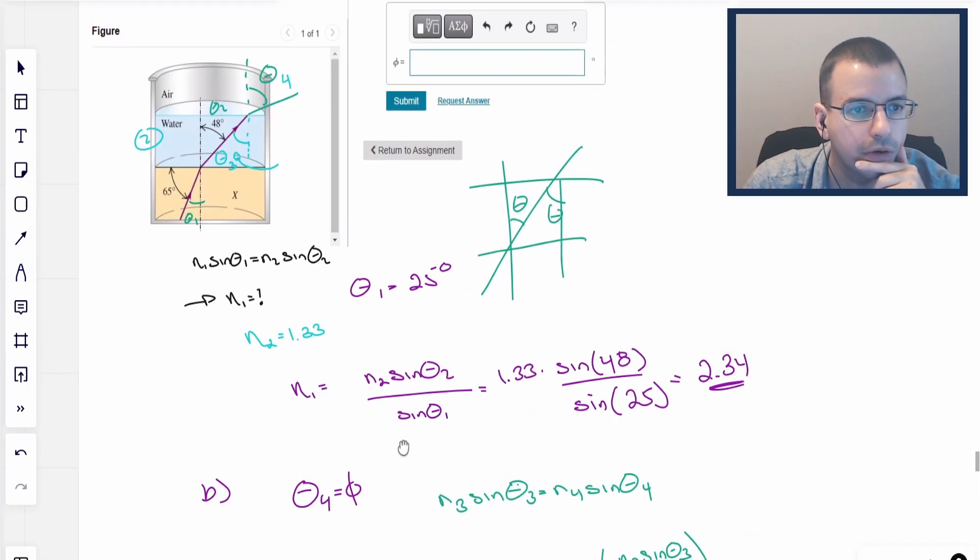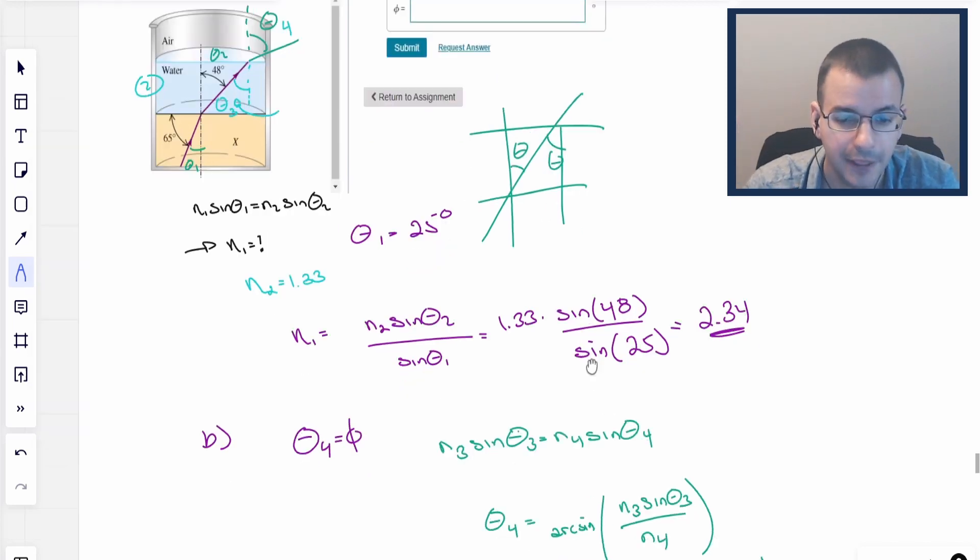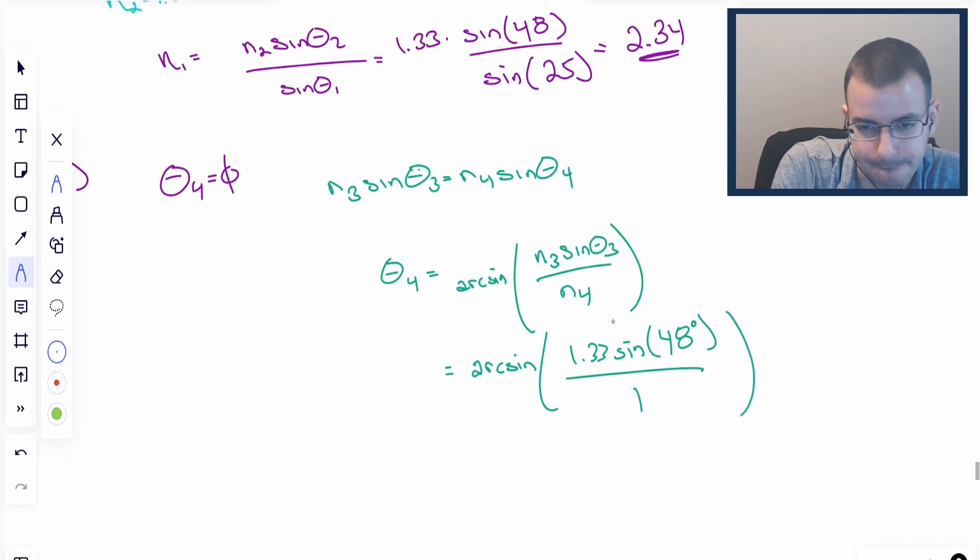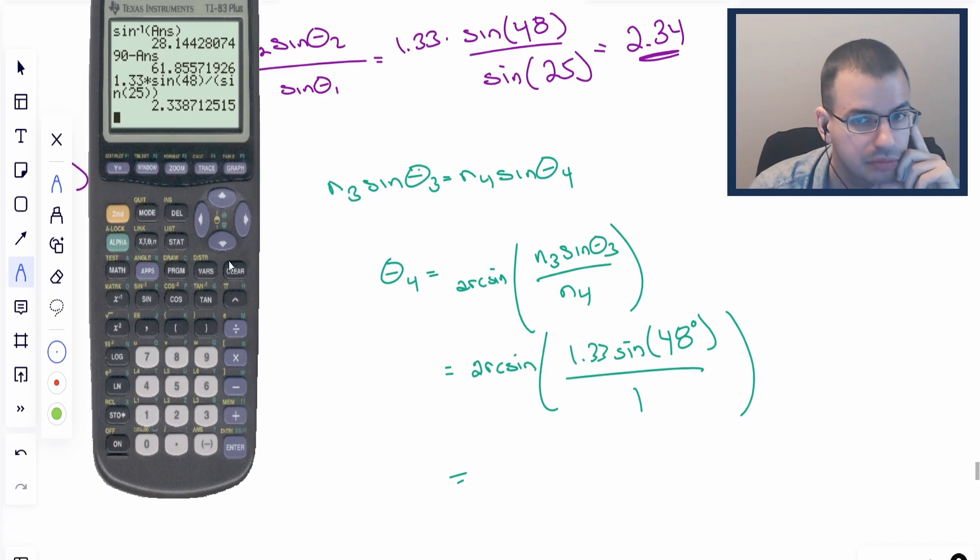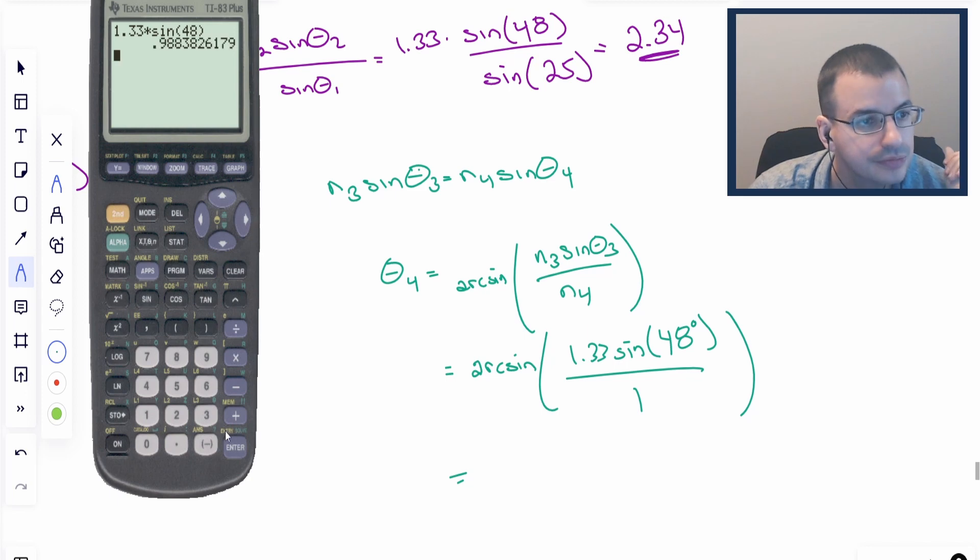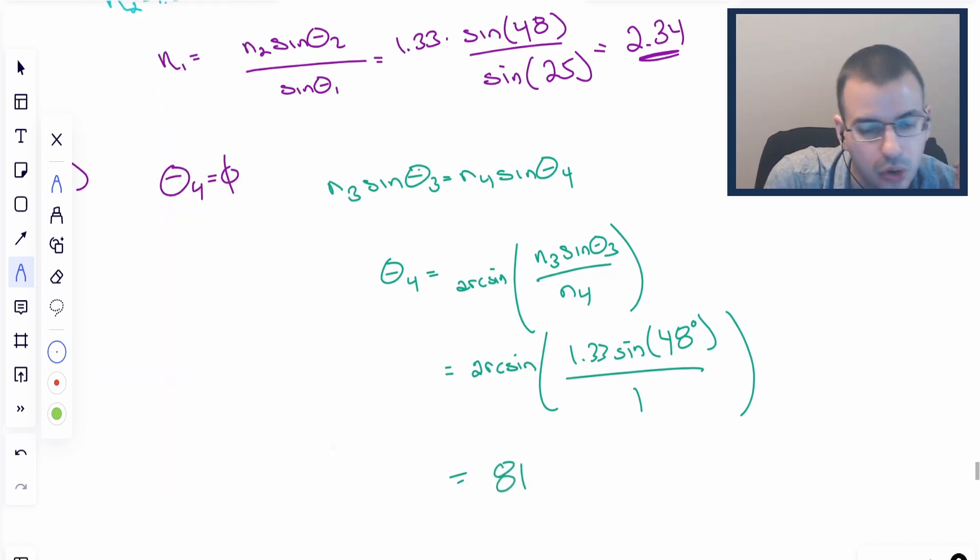Divided by N4, and since N4 is air, the index of refraction of air is about the same as index of refraction of vacuum, which is 1. So I'm going to do 1.33 times sine of 48. Then we're going to do the inverse sine of that answer. It's going to give us 81 degrees. So theta 4, which is the same as phi, is 81 degrees.